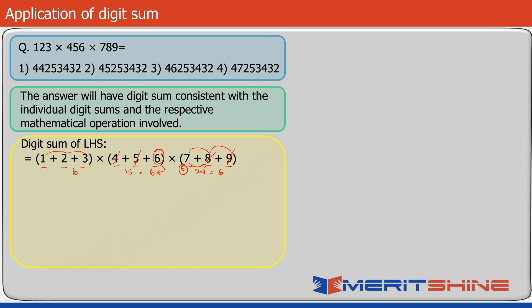So 6 into 6 into 6 gives us 216, which gives digit sum 9, which is 0. The smart way: 6 into 6 is 36, and 3 plus 6 is 9, so this part becomes 0. Anything multiplied by 0 is 0. So the digit sum of the LHS is 0.